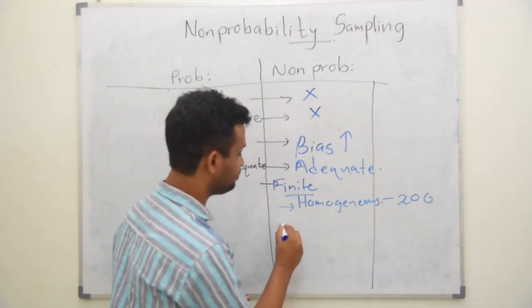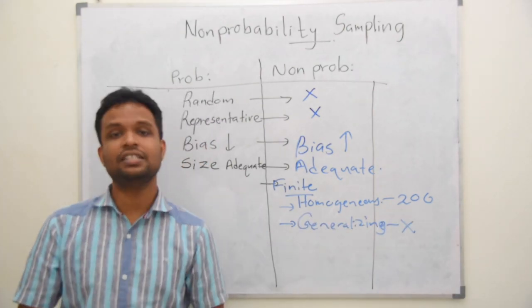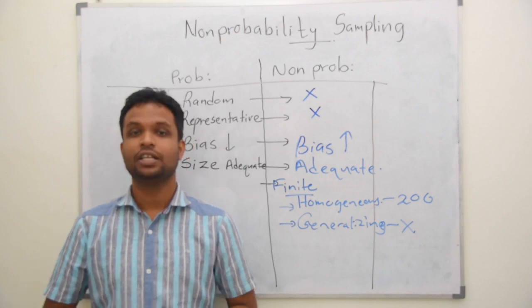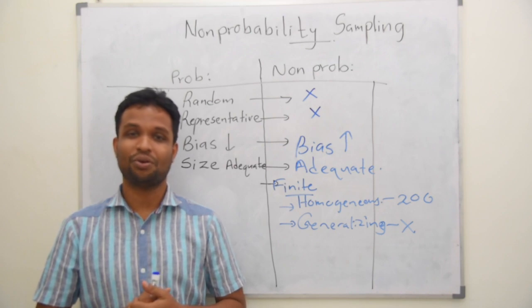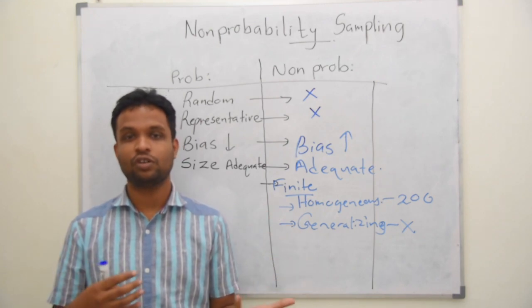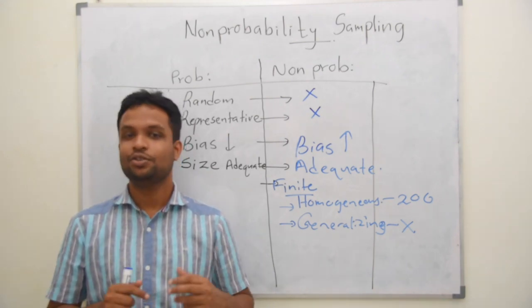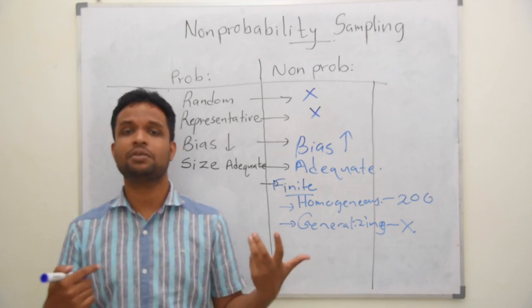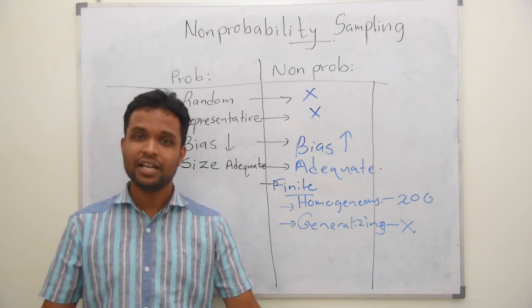And another important thing is, we are not interested in generalizing. If we are not interested in generalizing, why do we need a probability sampling? Assume that you are the owner of a factory. You need to identify what they are thinking about your factory. In such case, you are not interested to tell other people, this is the general perspective of my factory workers about my factory. To have some idea, to do some modifications, you can take a few of the workers in your factory and interview them and have some idea. You don't need to analyze it. You just need to get some idea. In such case, we can go for non-probability sampling.